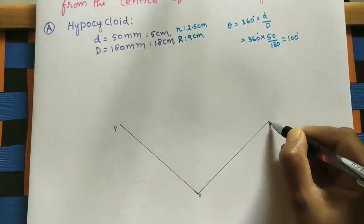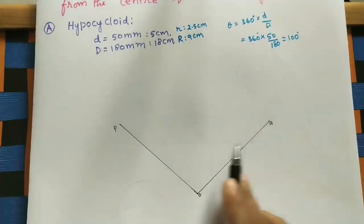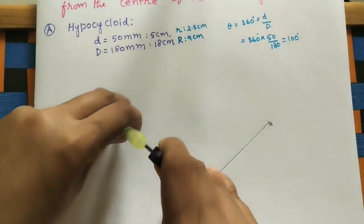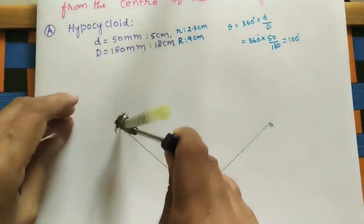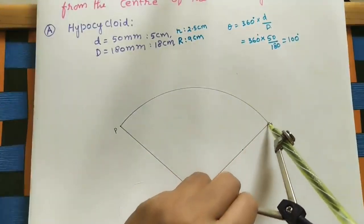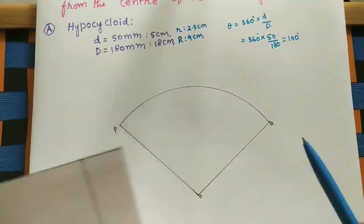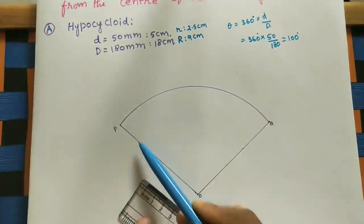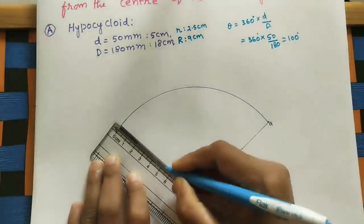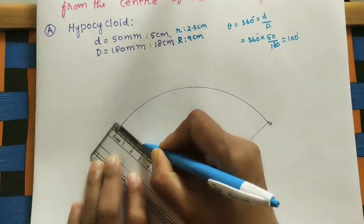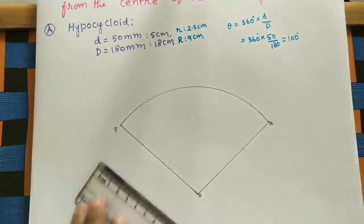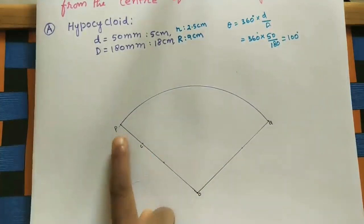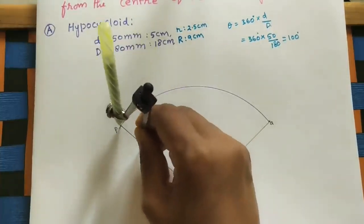P is the starting point and Q is the end point. Using a compass with O as center and OP as radius, draw an arc joining P and Q. Then draw the smaller circle: diameter is 5 cm, mark the midpoint at 2.5 cm. This midpoint is center C. With C as center and CP as radius, draw the smaller circle.